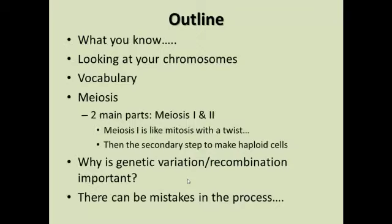Once again, we went over what you knew from before. We looked at your chromosomes, covered vocabulary, went through meiosis, talked about why genetic variation is important, and noted that there can and often are mistakes in the process. Nobody is perfect on a cellular and molecular level.